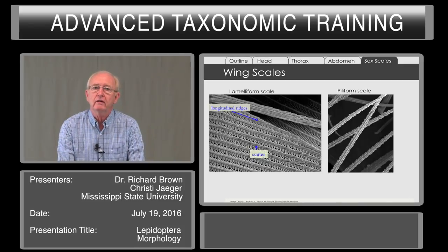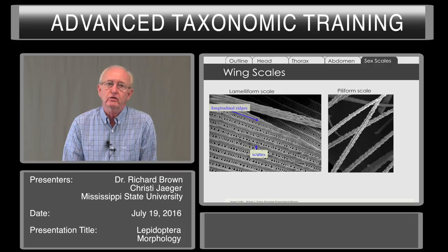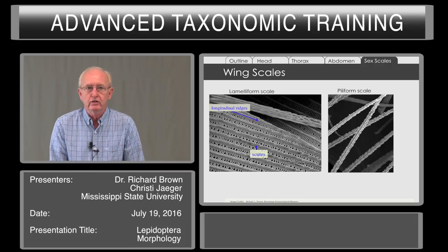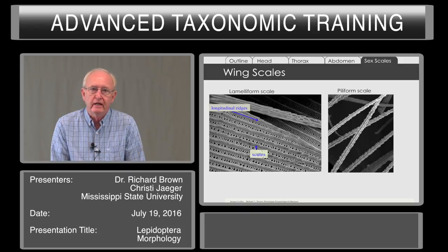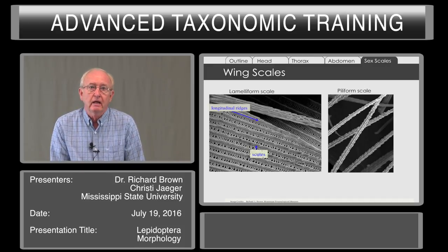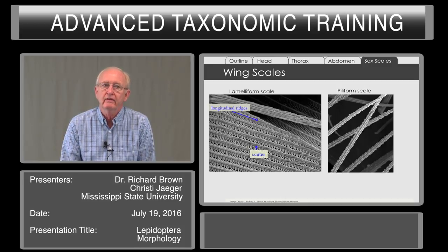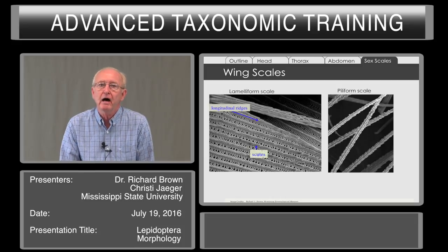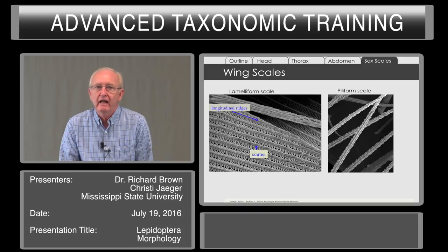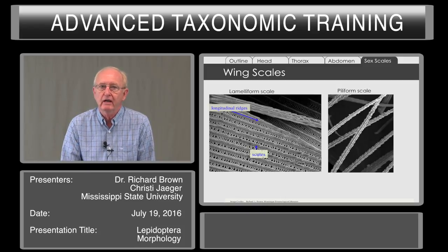Wing scales cover the whole body of the Lepidoptera. If you look at an individual wing scale with a scanning electron microscope, you see it has longitudinal ridges. Scales are found throughout many groups of insects — mosquitoes, some lice, weevils, beetles, and even ants — but none of these scales in other insects have scutes. The longitudinal ridges are divided by individual little projections, and that's peculiar to the Lepidoptera. Sometimes we refer to hairs or fringe on the body of moths, but these are actually just round or piliform scales — you can see the scutes, it's a scale even though it's round and hair-like.